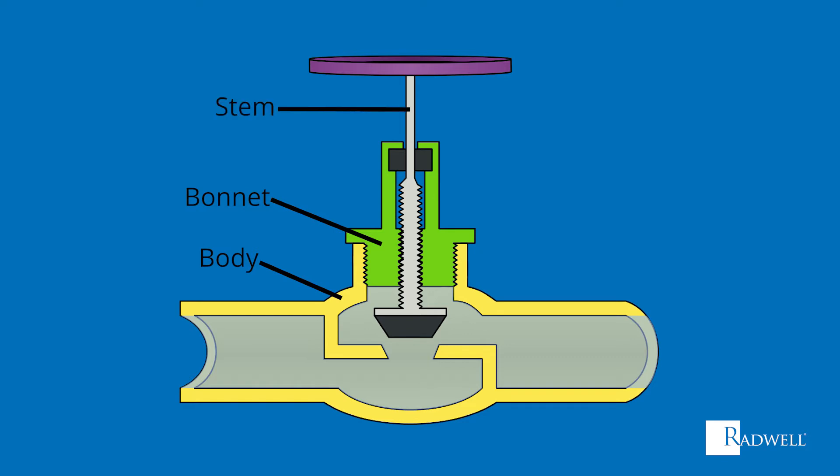Third is the stem, which serves as a connector from the actuator to the inside of the valve and transmits the actuation force. Next is the hand wheel, which provides the operator the ability to control the stem.